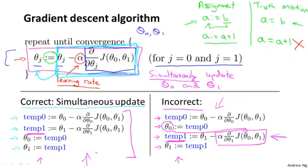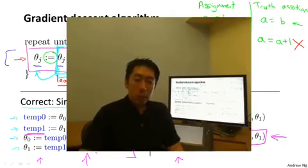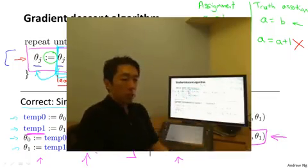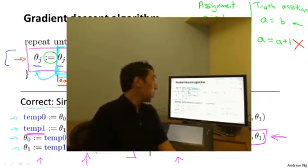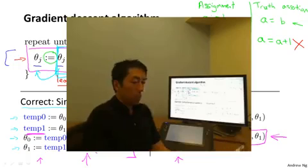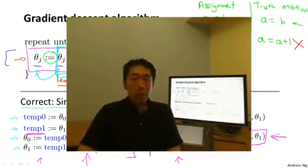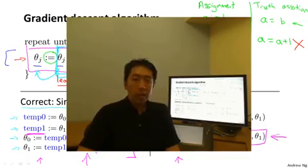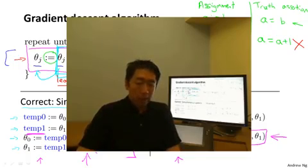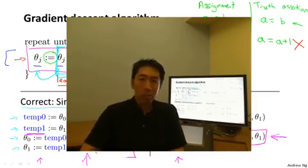That's the outline of the gradient descent algorithm. In the next video, we're going to go into the details of the derivative term, which I wrote out but didn't fully define. If you've taken a calculus class and are familiar with partial derivatives, that's exactly what that derivative term is. But if you aren't familiar with calculus, don't worry — the next video will give you all the intuitions and tell you everything you need to know to compute that derivative term, even if you haven't seen calculus or partial derivatives before.